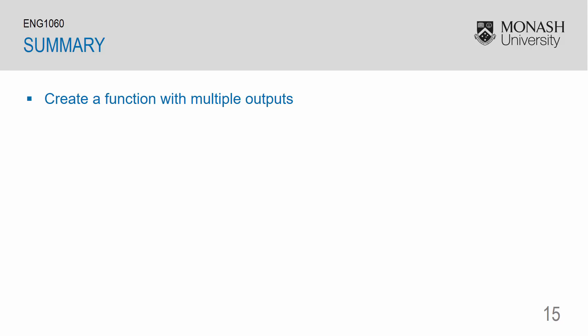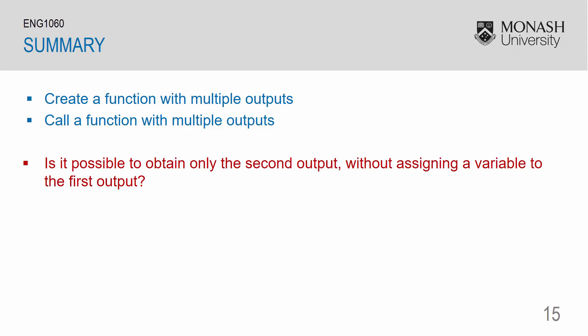To summarize, in this video we have learned how to create a function with multiple outputs, and how to call a function with multiple outputs. As a final thought for this video, is it possible to obtain only the second output without assigning a variable to the first output? So in using the previous example, is it possible to obtain a value for drop_velocity without assigning a variable to drop_time?